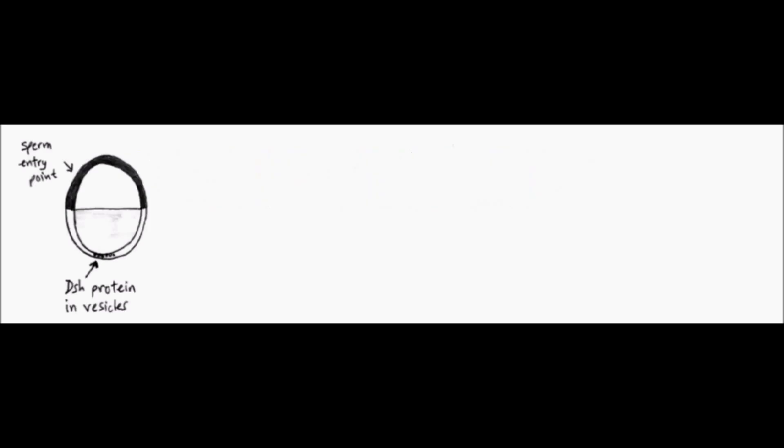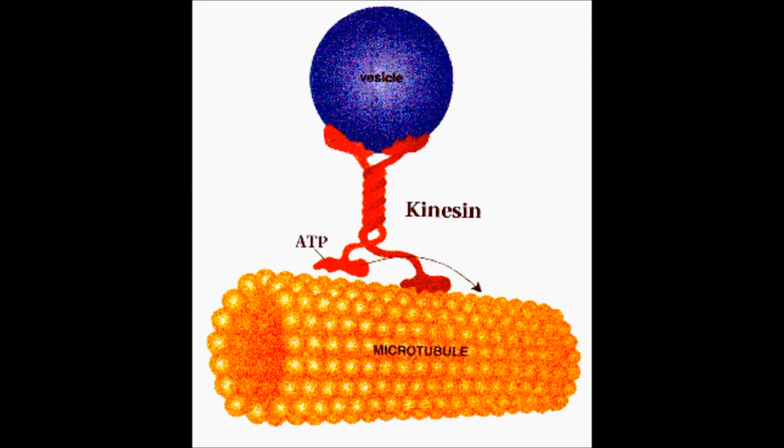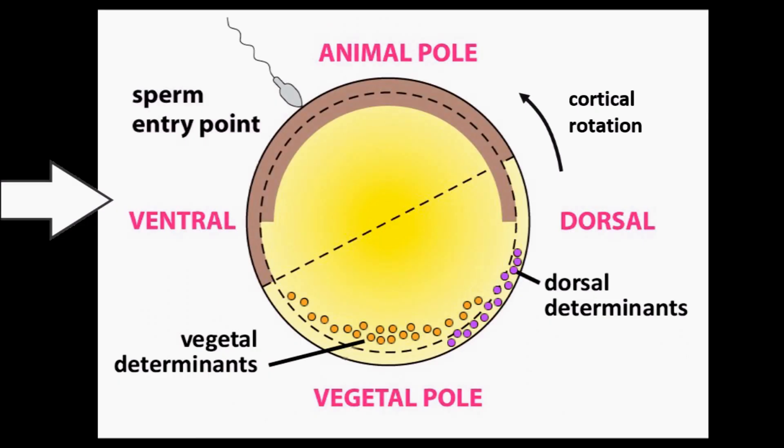Disheveled is a potential candidate. Disheveled is found in vesicles in the vegetal pole prior to fertilization. After sperm entry, the vesicles are moved to the future dorsal side along the microtubule tracks, the same microtubules causing cortical rotation. Cortical rotation sets up dorsalization by moving Disheveled to the future dorsal end.